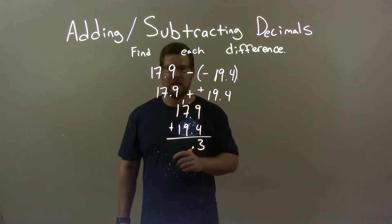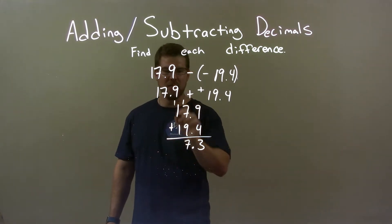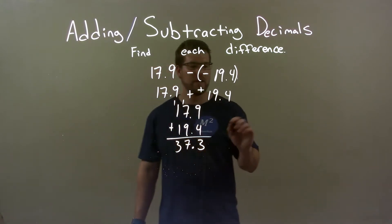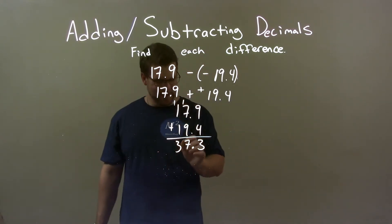We have, well, 1 plus 7 is 8, plus 9 is 17. Okay, put a 7 here, add another 1. Carry that, right? 1 plus 1 plus 1 is 3. We have 37.3.